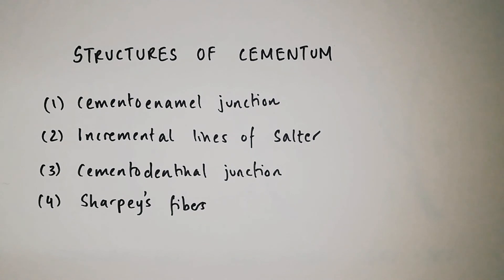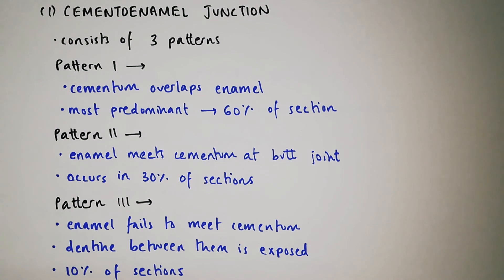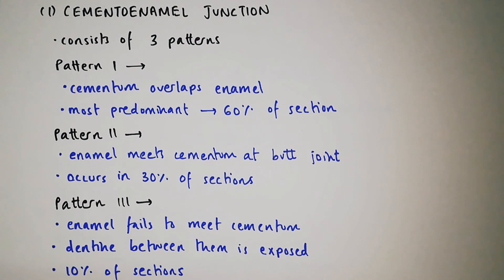Cementum is composed of four structures: cemento-enamel junction, incremental lines of Salter, cemento-dentinal junction, and Sharpey's fibers. The cemento-enamel junction consists of three patterns. In the first pattern, cementum overlaps the enamel — this is the most predominant, occurring in 60% of sections. In the second pattern, enamel meets the cementum at a butt joint, occurring in 30% of sections. In the third pattern, enamel fails to meet the cementum, resulting in exposed dentine between them, occurring in 10% of sections.